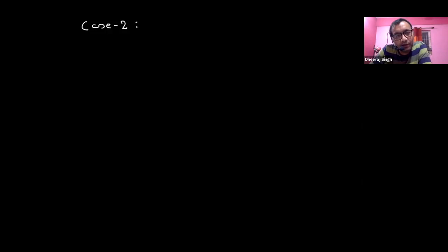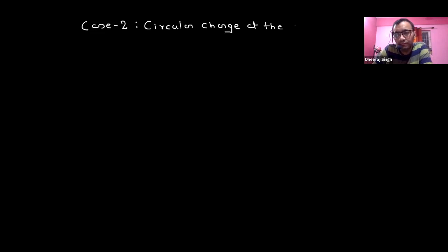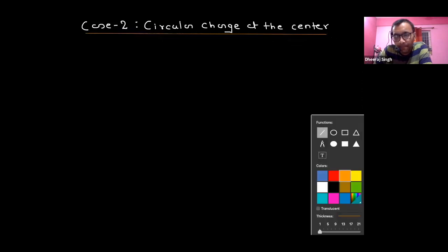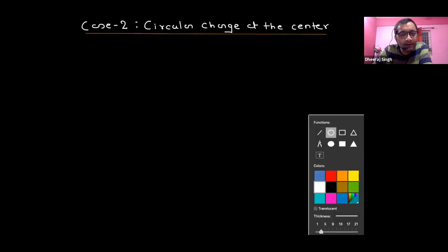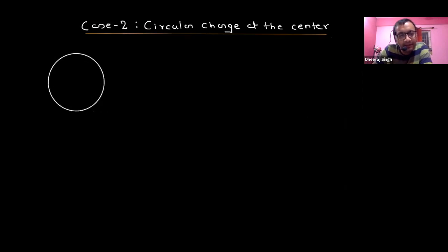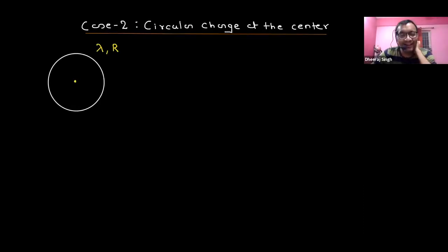Case number two is circular charge at the center. There is a circle, charge per unit length is lambda, radius of the circle is capital R. You have to find out the electric field at the center. It is equal to zero.